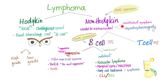In non-Hodgkin's you also get constitutional symptoms, also known as B-symptoms or B-cell symptoms, as well as hepatosplenomegaly, because non-Hodgkin's is extra-nodal. Non-Hodgkin's is subdivided into B-cell, 70% of cases, the most common, and T-cell, the least common, 30% of cases only.